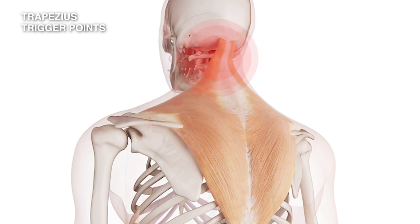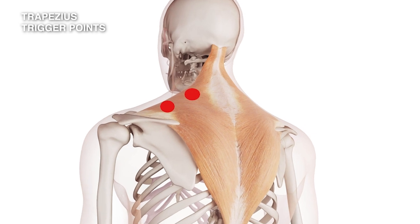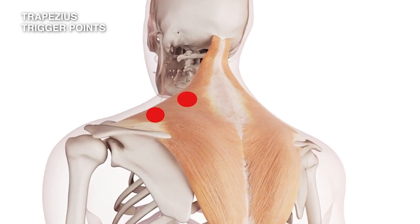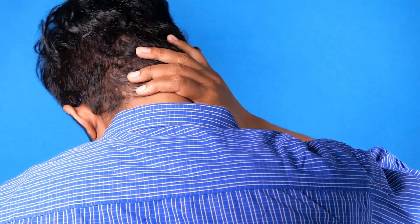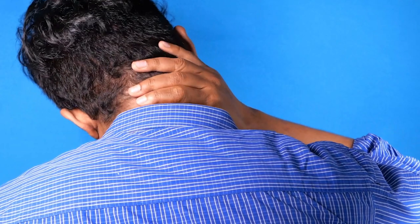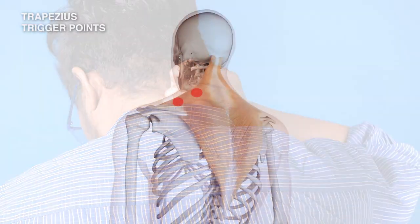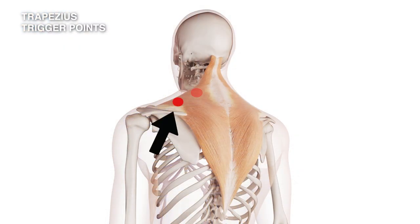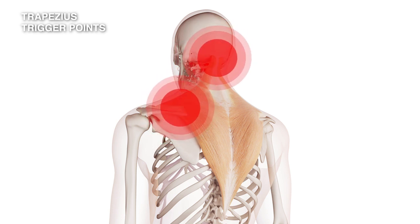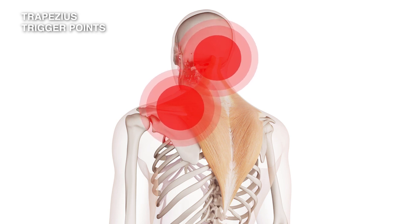The most common concentration of pain is at the base of the skull. This is a perfect example of how understanding trigger points matters: if someone comes in complaining of pain at the back of the head and you only examine that area, you literally miss the point. Trigger point number two is very common and causes this pain pattern, with significant concentration at the base of the skull.